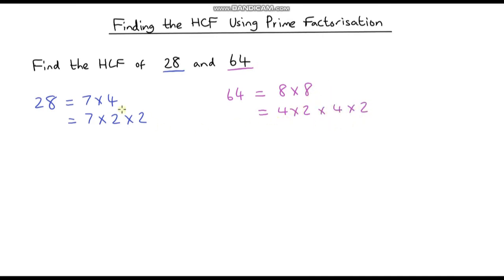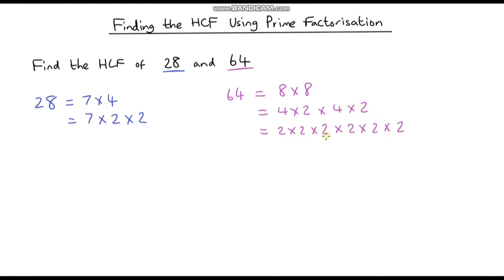We can break down 4 as well: 4 is the same as 2 times 2. So 64 becomes 2 times 2 times 2 times 2 times 2 times 2 — we're multiplying 2 by itself 6 times.